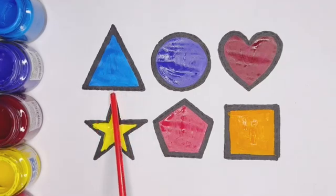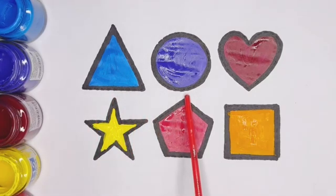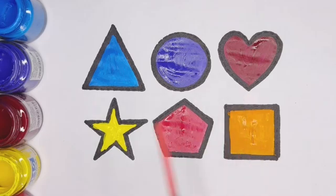Sky blue color triangle. Violet color circle. Maroon color heart. Yellow color star. Pink color pentagon. Orange color square kids.